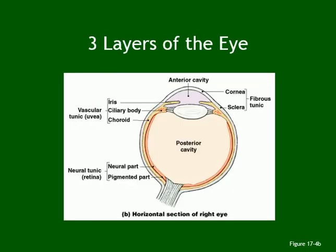The eye is surrounded by three layers. The outermost is called the fibrous tunic — tunic means layer. The middle layer is called the vascular tunic. The inner one is called the neural tunic. The fibrous tunic is tough fibrous tissue and includes the sclera, which is the white, and the cornea.